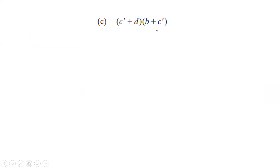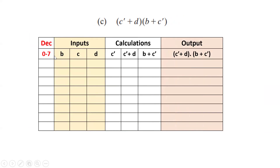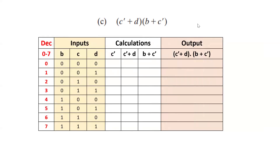This is the third boolean function. B, C, D are three input variables. Again we develop the truth table based on the input variables, with decimal equivalent values from 0 to 7. We do calculations based on the given boolean function variables. First we find C', then C'+D and B+C', and then find the output value. C' means complement of C. For the first two combinations with zeros in C, the C' value should be 1s, then 0s, 1s, 0s — just the opposite values.